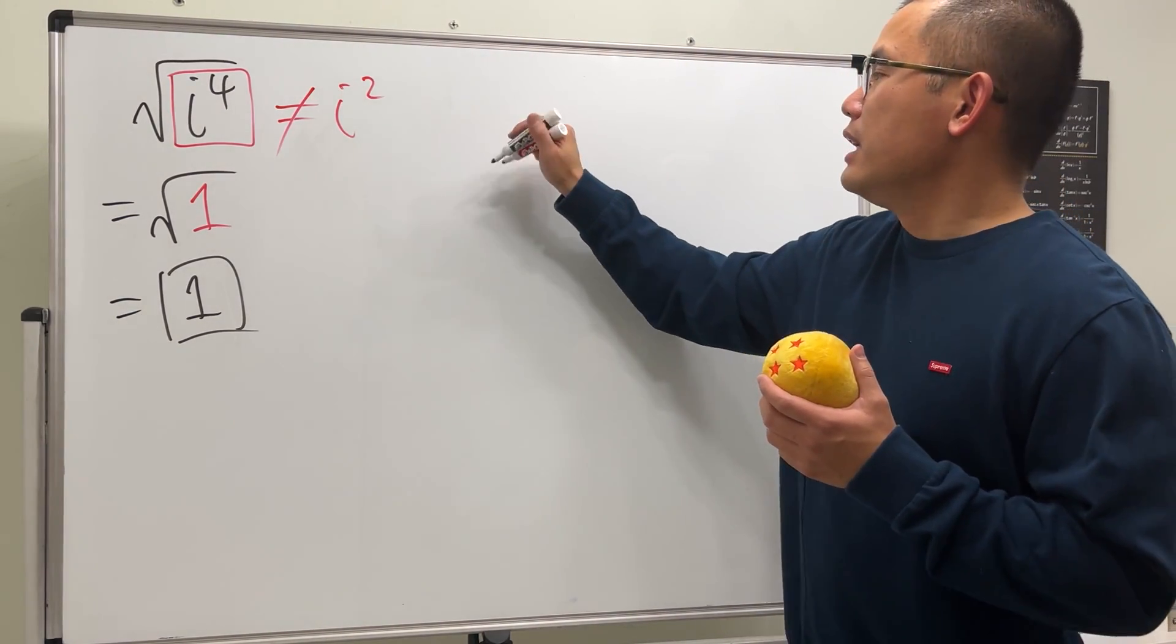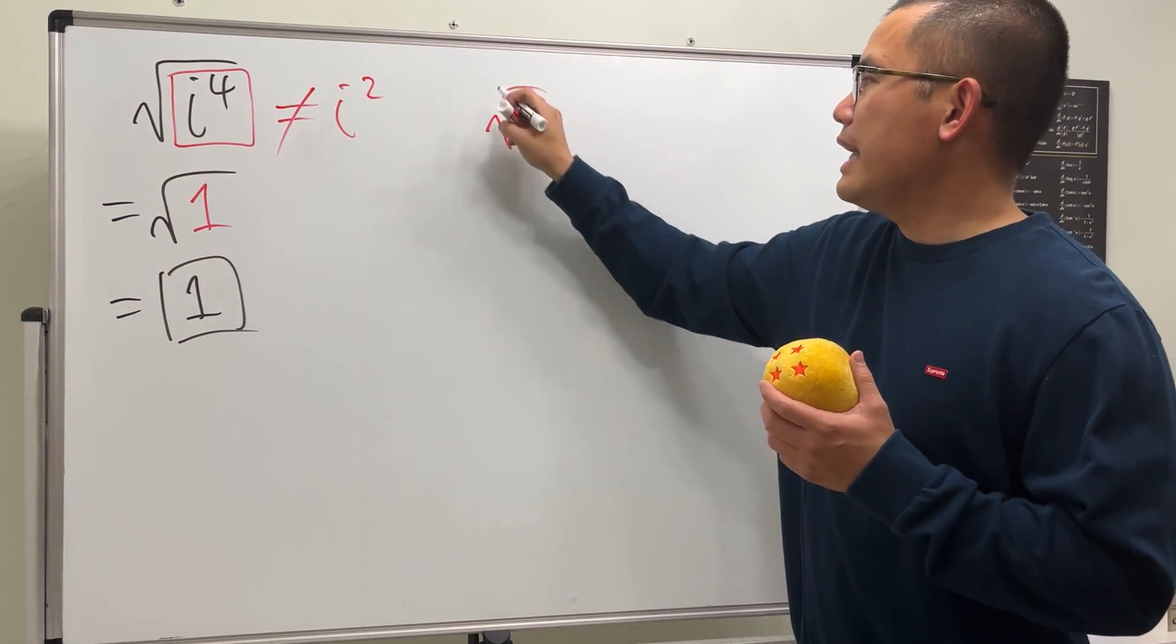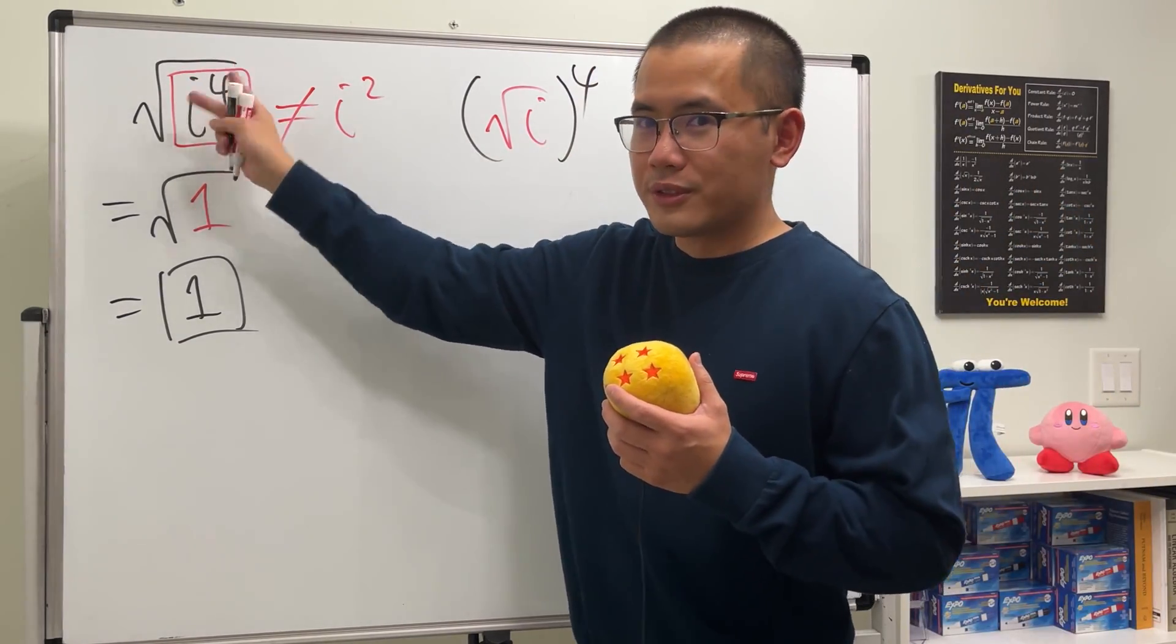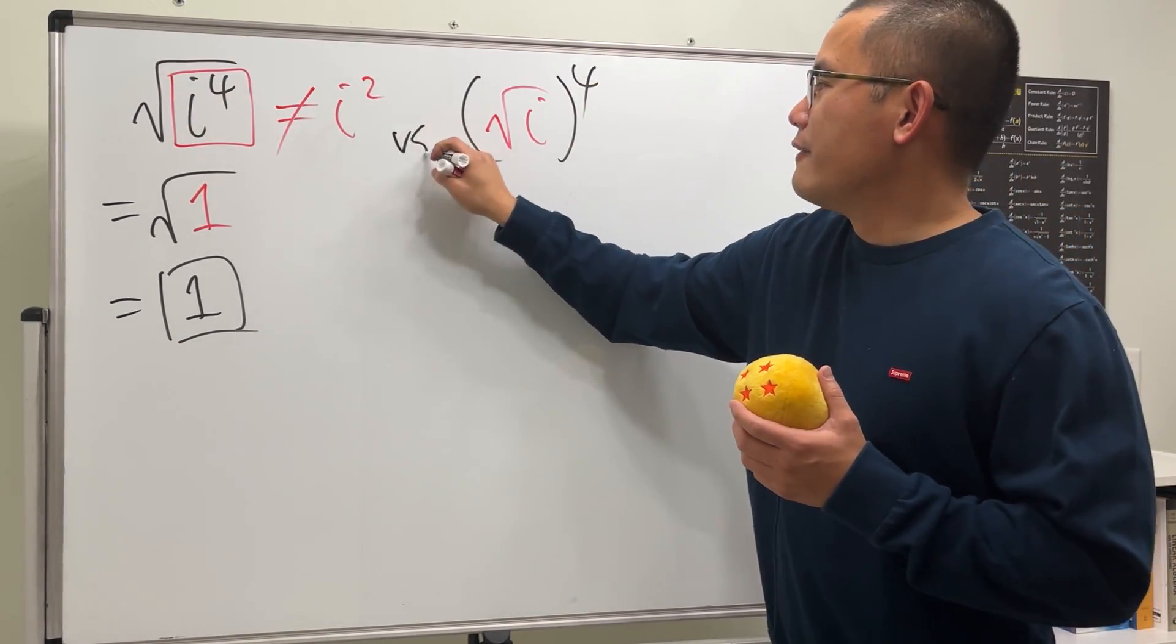And here's another question for you guys. If we have square root of i like this and then raised to the fourth power, you see how I just changed the square root and also the power? This and that are very different.